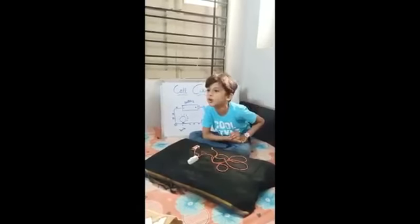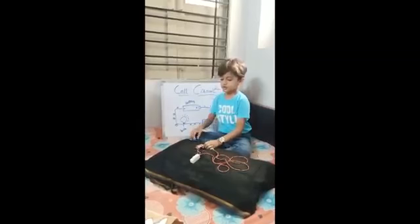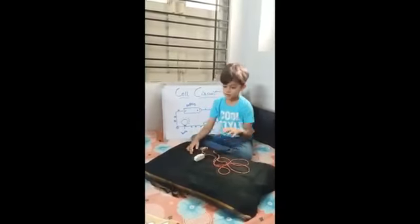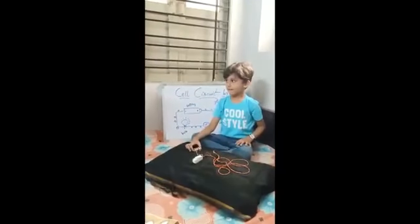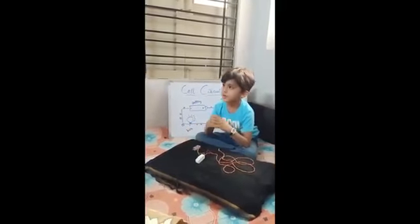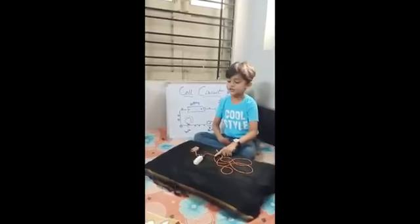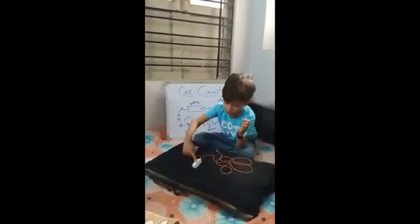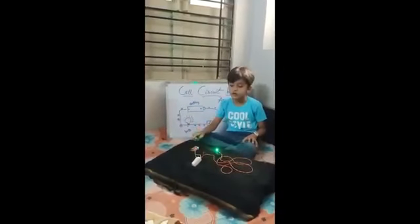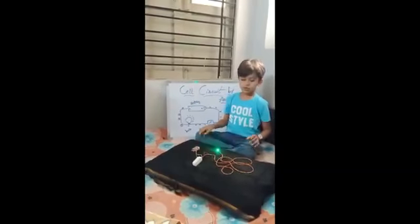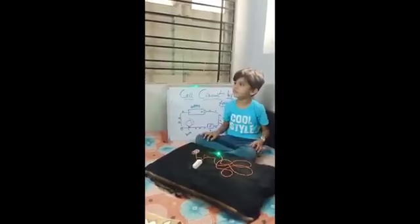Let me show you a simple model. Here is a switch, a battery which stores electricity, the wires, and the bulb. As we switch on, the current flows through the wire from the battery to the bulb.